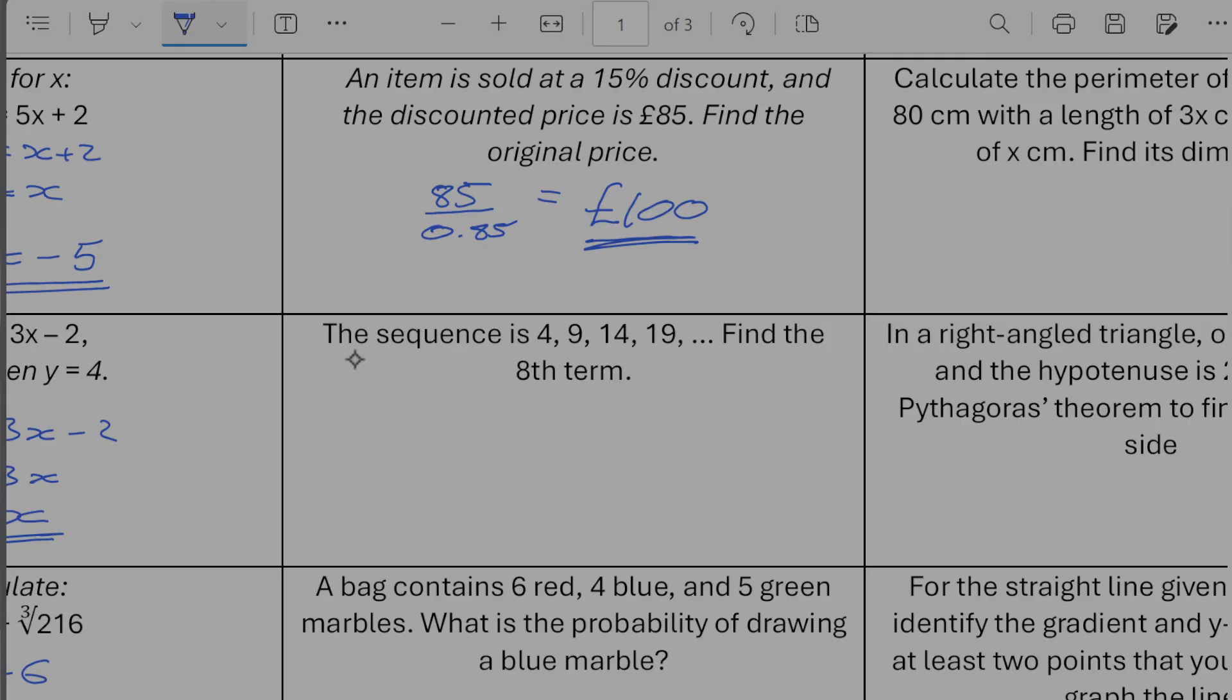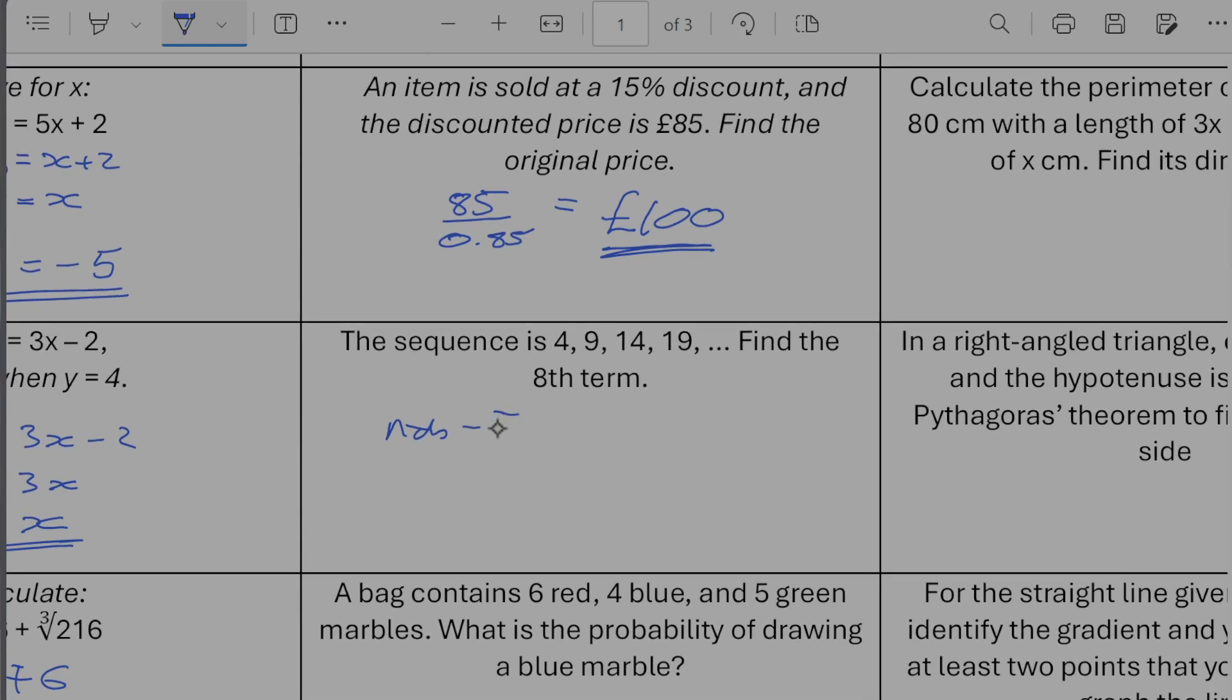The sequence is 4, 9, 14, 19 find the eighth term. So this is quite a nice one. So the nth term is going to be equal to 5n minus 1. So the eighth term is going to be equal to 5 times by 8 minus 1 which would be 40 minus 1 which would be 39.